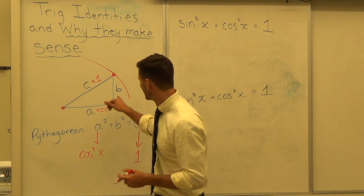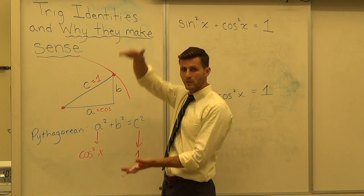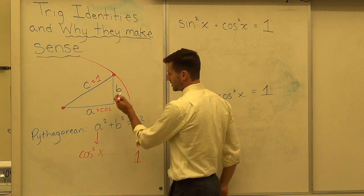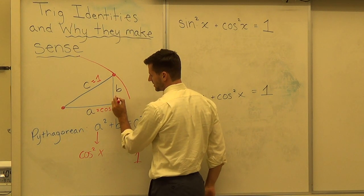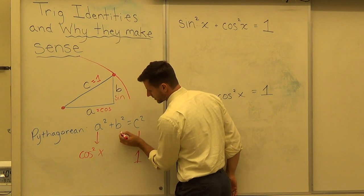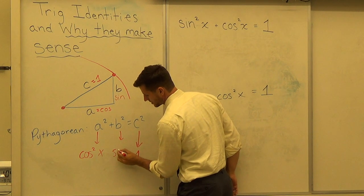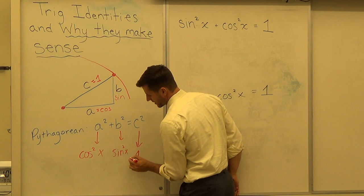And the last part, B, the other side, is how much we move up and down, our height. And that's our sine. So underneath B squared I'm going to put sine squared of X.